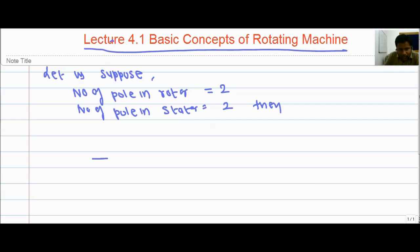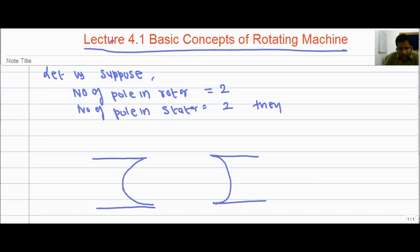If we draw the stator and rotor, we can say that this is the stator, which has 2 poles — a north and a south. And this is the rotor, which is going to rotate, and it also has two poles: north and south.